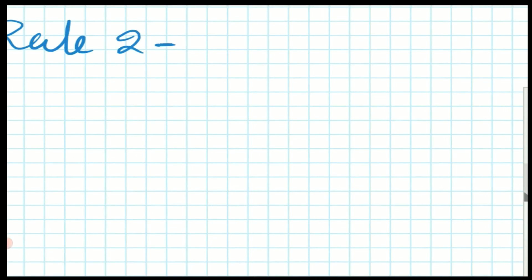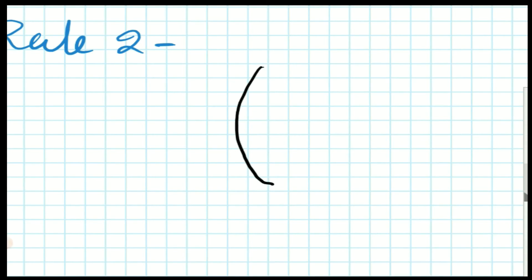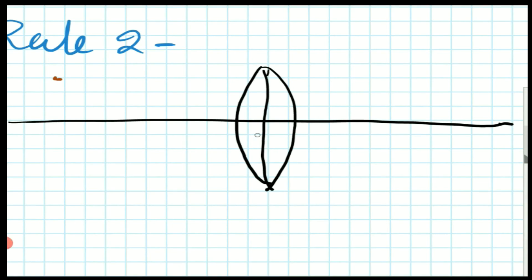Rule number two is that when a ray of light passes through the optical center, then it passes without any deviation. That means after refraction, it passes straightway.